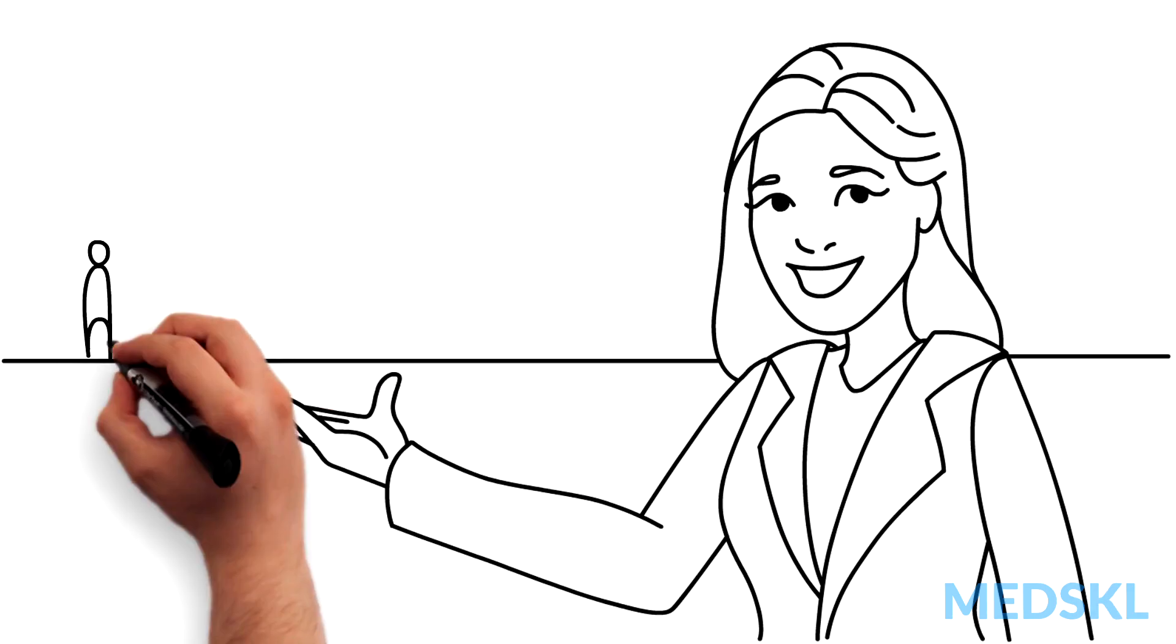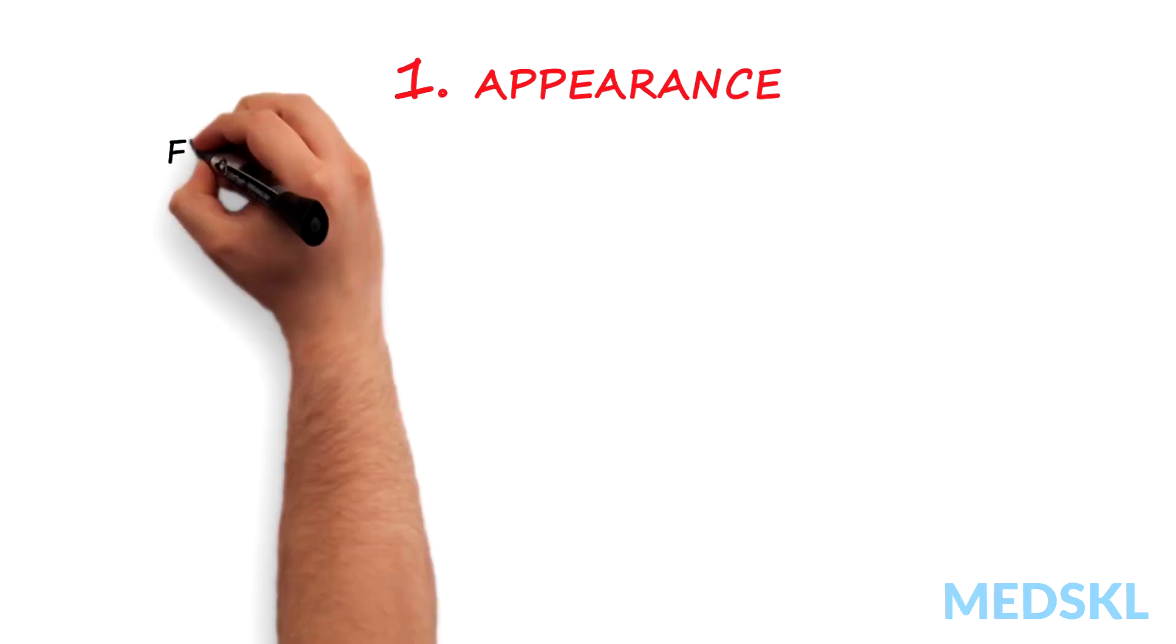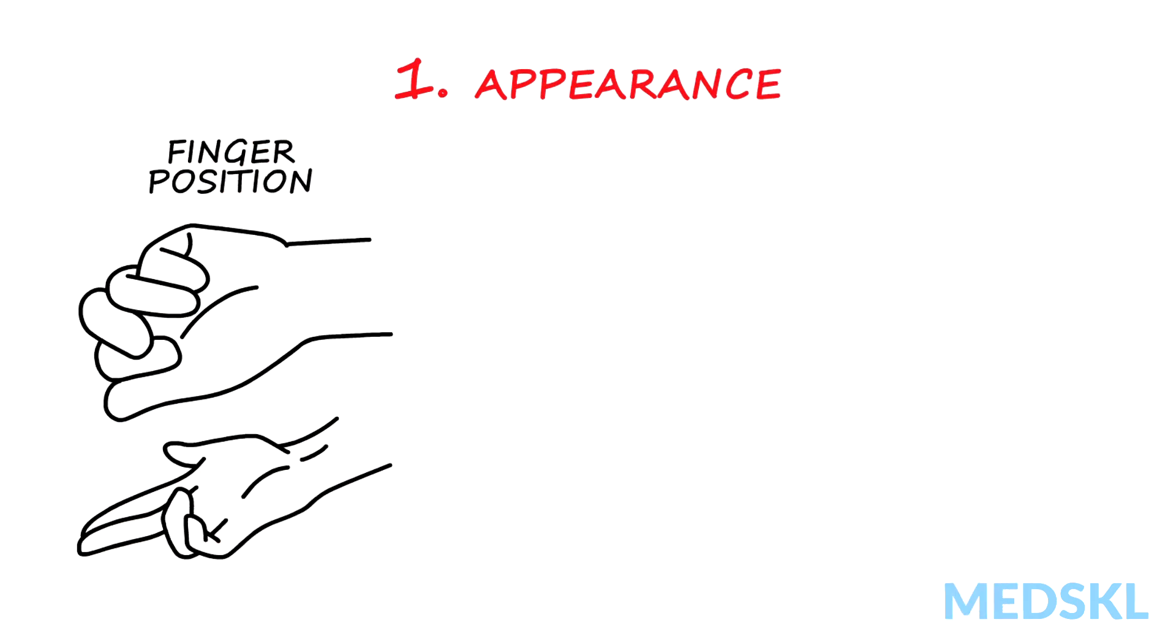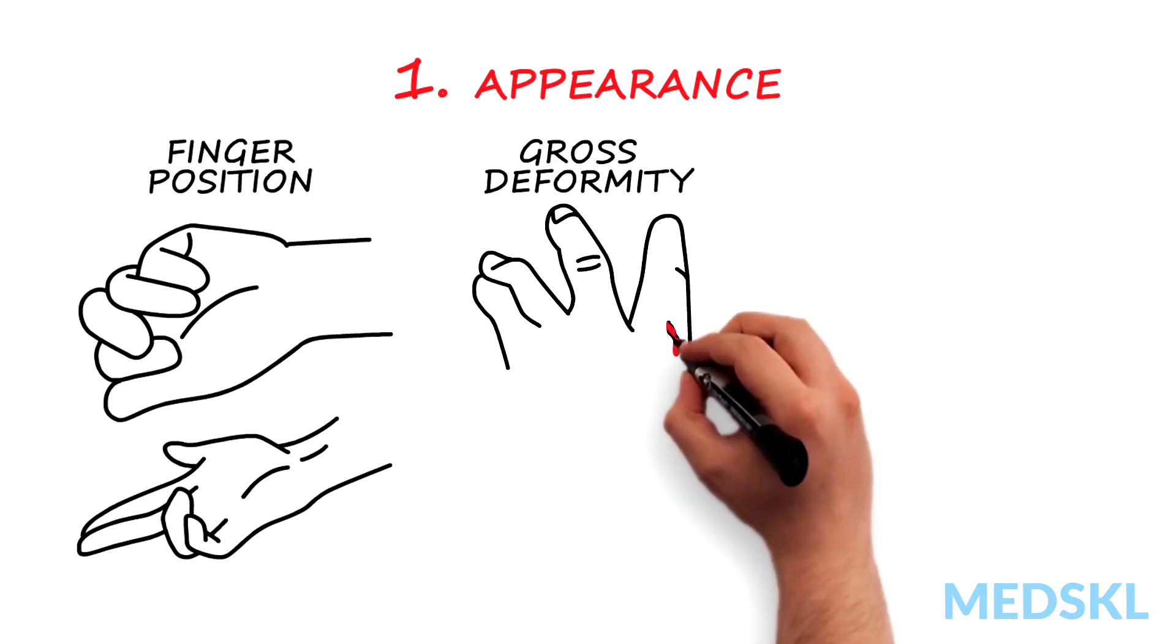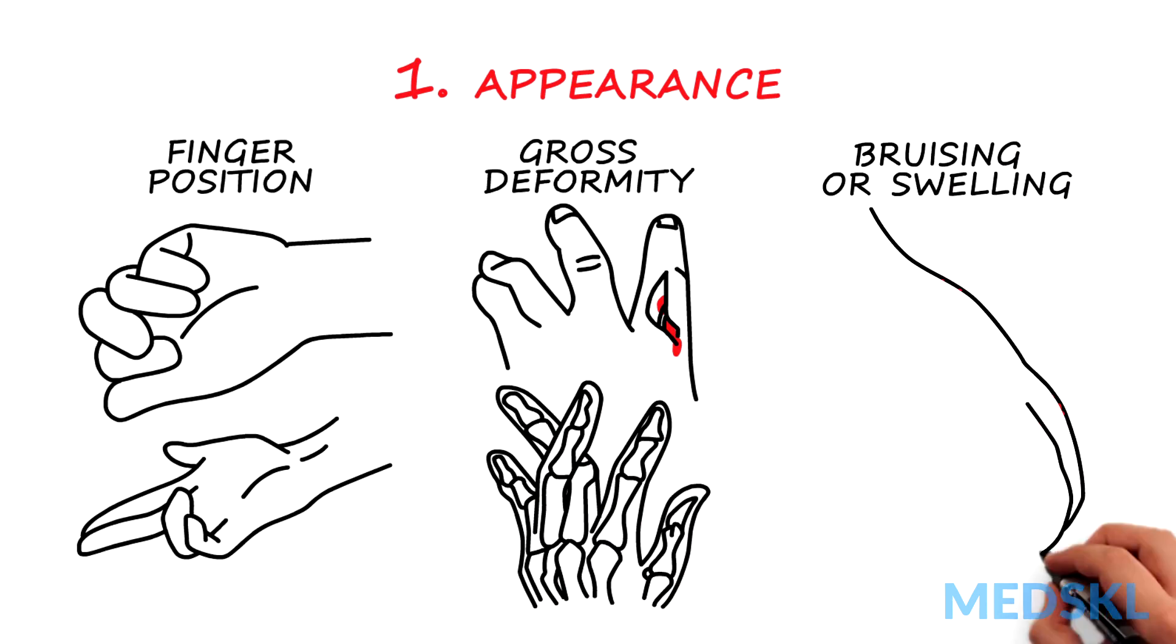When examining the hand, it's important to assess the patient in steps. First, appearance: check for finger position with respect to scissoring or flexing at rest, gross deformity such as an open fracture or dislocation, and bruising or swelling.